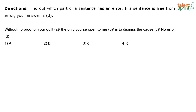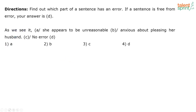We're moving into spot-the-error questions. First: 'Without no proof of your guilt, the only course open to me is to dismiss the course.' The error is in part A — when I have 'without', I don't need 'no' again, it's redundant. I have to change 'no' to 'any': 'Without any proof of your guilt.'